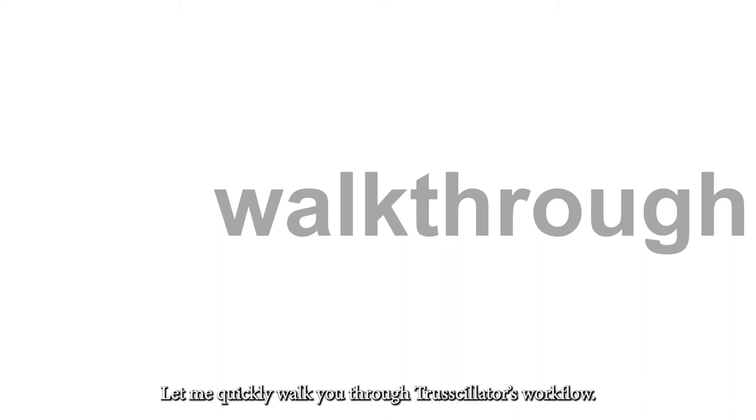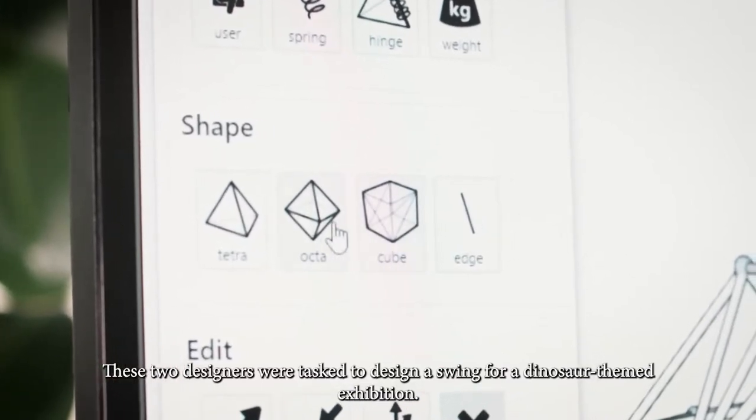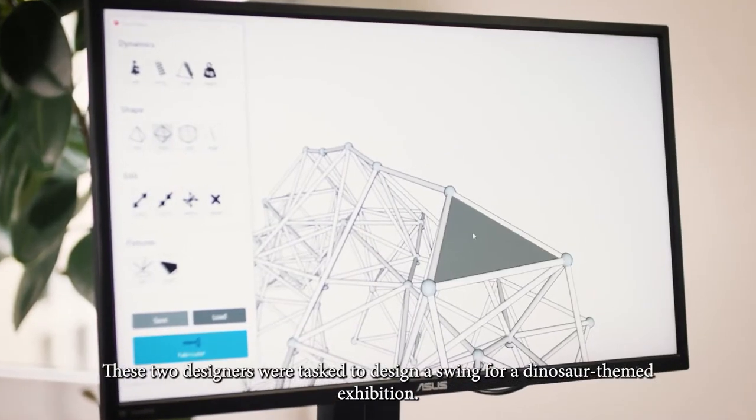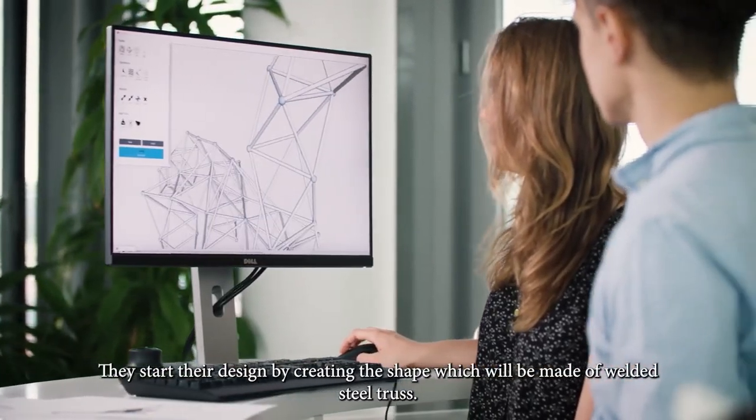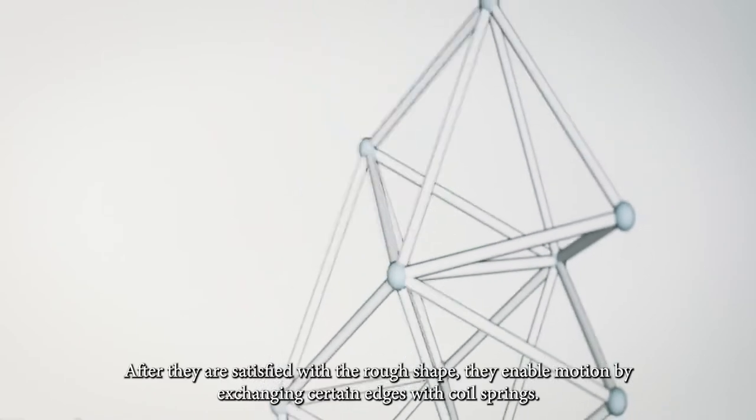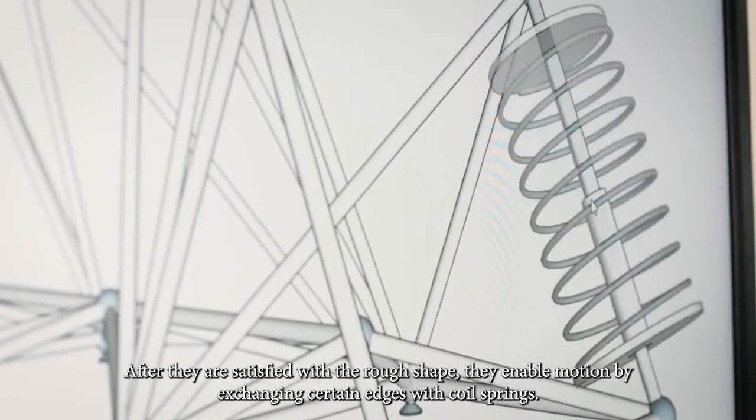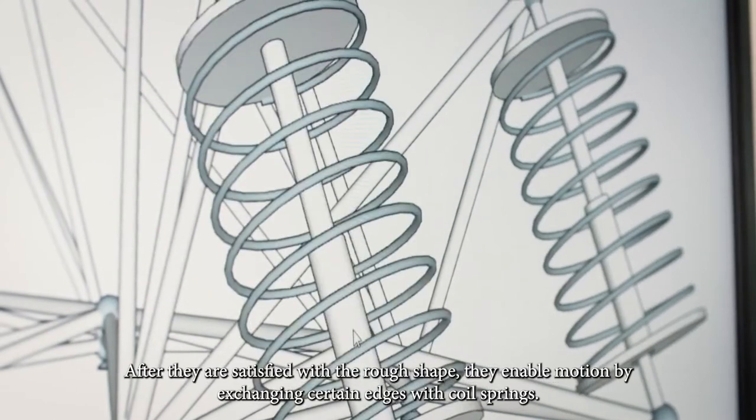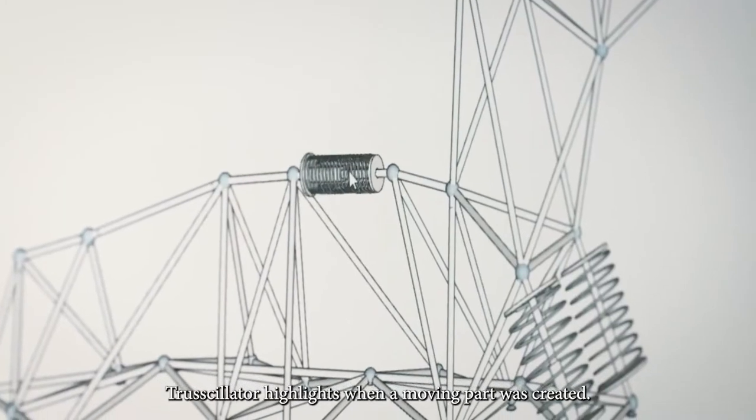Let me now quickly walk you through Trussillator's workflow. These two designers were tasked to design a swing for a dinosaur-themed exhibition. They started design by creating the shape which will be made of welded steel truss. After they are satisfied with the rough shape, they enable motion by exchanging certain edges with springs. Trussillator highlights when a moving part was created.